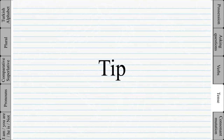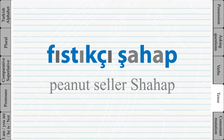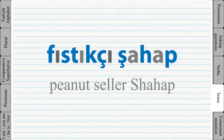A useful tip to remember all these letters is to memorize the two words meaning 'the peanut seller': 'çetşap' / 'shahab'. If you look closely, you will see that these two words contain all the letters that you must memorize.